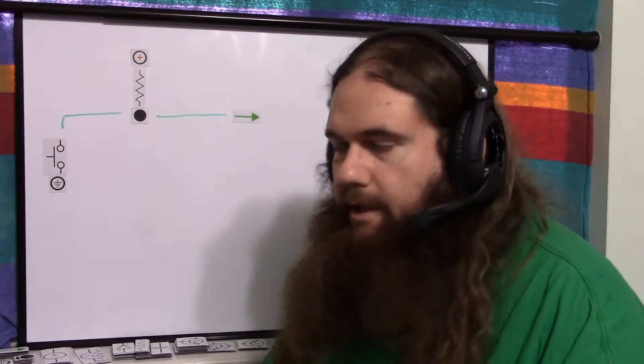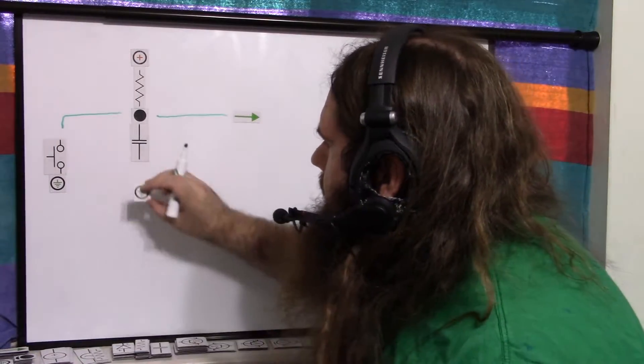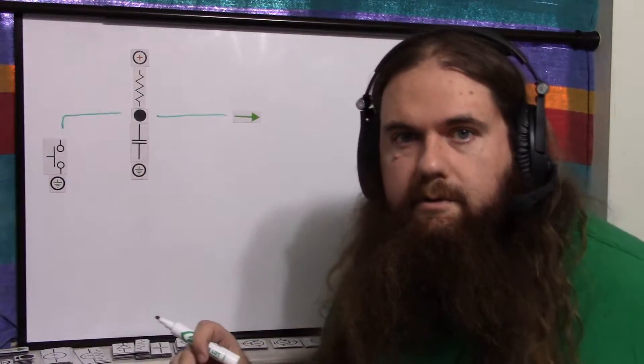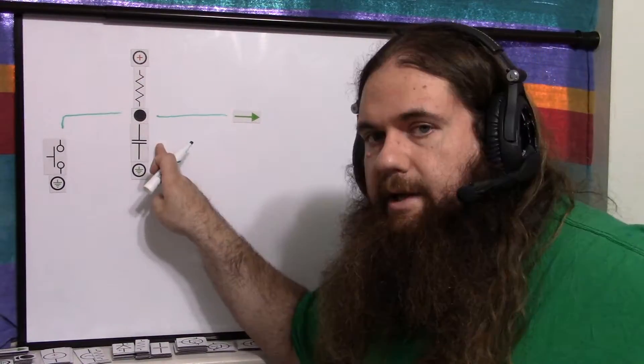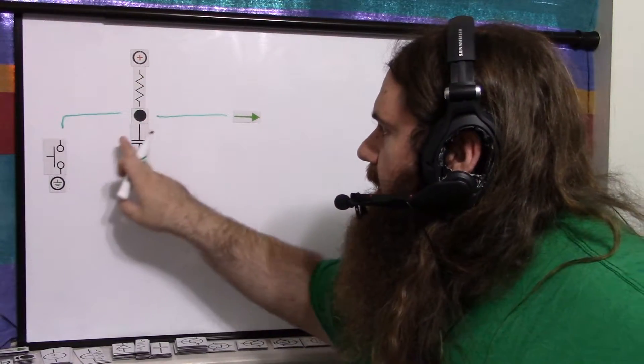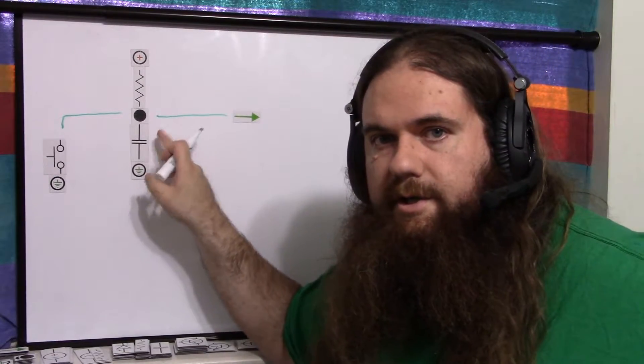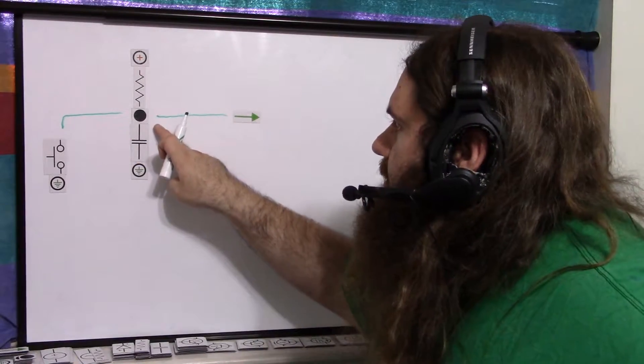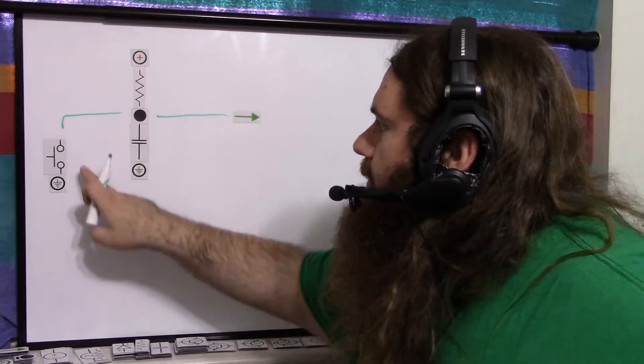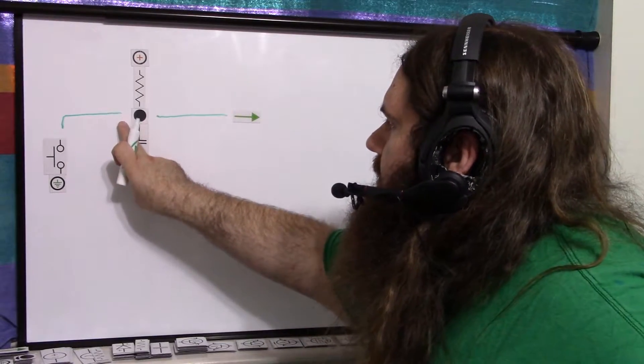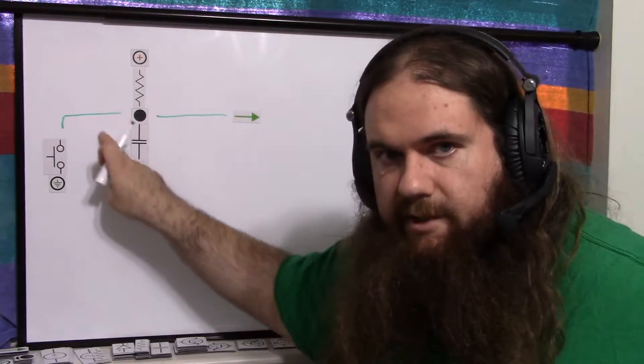So you turn this into an RC network. The simplest and most popular way to do this, whenever you Google switch debounce, you'll just see this. So what happens here is when the button is not pressed, the capacitor charges up and cuts off current so that the top of the capacitor is up at the supply and it's still a pull-up resistor. When you press the button, it discharges the capacitor through itself basically.